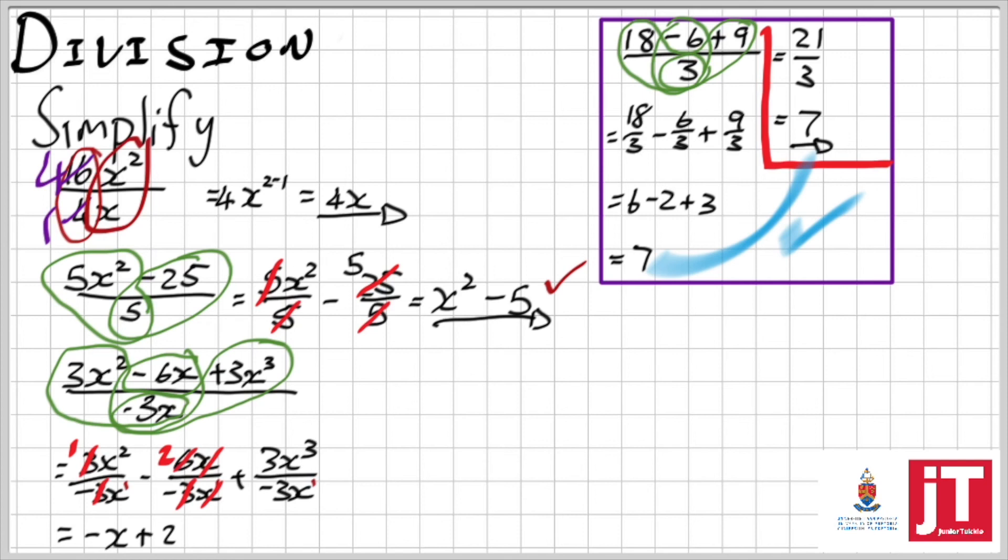But now I'm going to do the same with that back expression, the back term. Positive 3 over negative 3, that is negative 1. X squared divided by x, remember you can apply the second exponential law, and that gives me x to the 2 minus 1. An amazing sum.